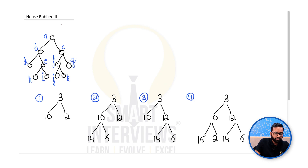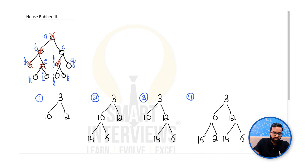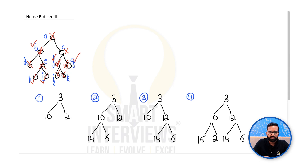Let's explore a more complex tree where nodes are labeled a, b, c, and so on. If you decide to choose node b, you cannot take its parent, its siblings, or its children. But you can still take node f and node g, along with nodes h and i. So it's not as simple as alternating between levels — it's more nuanced than that.